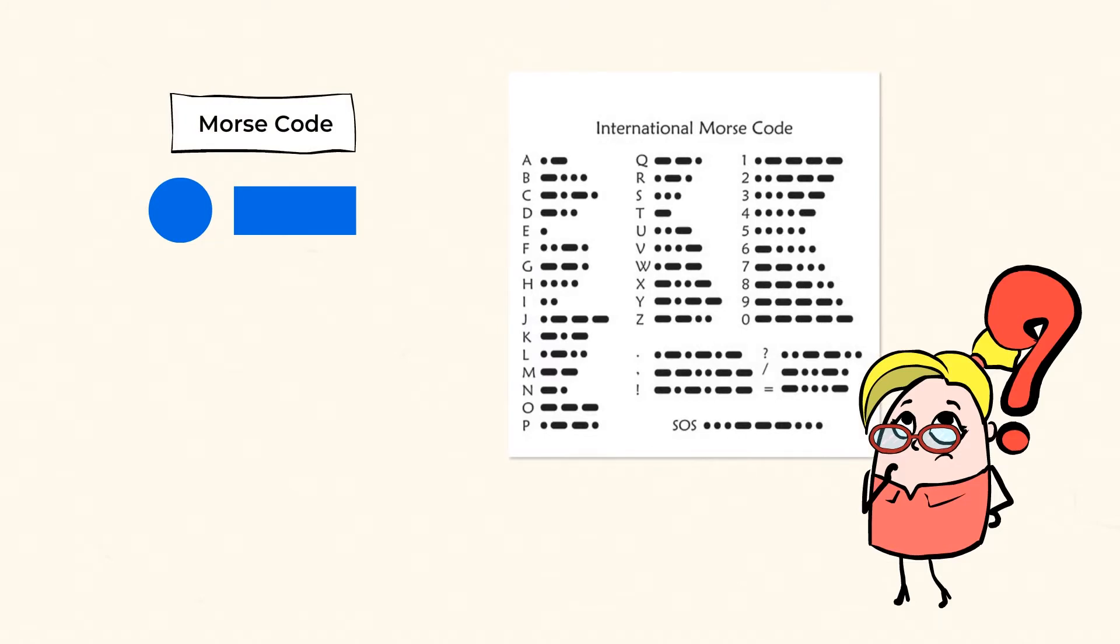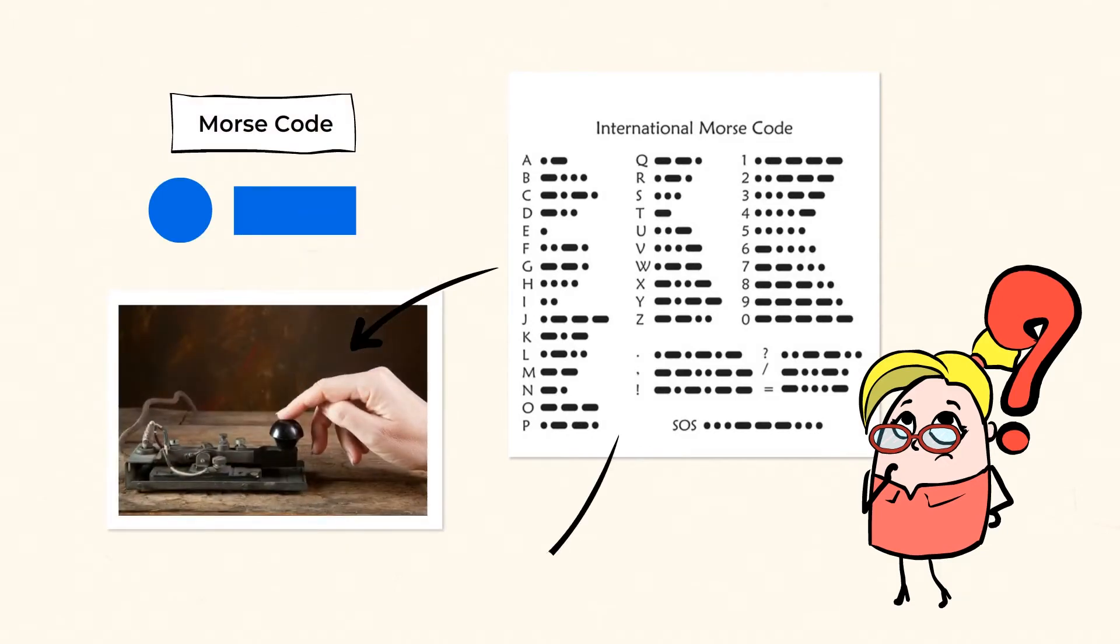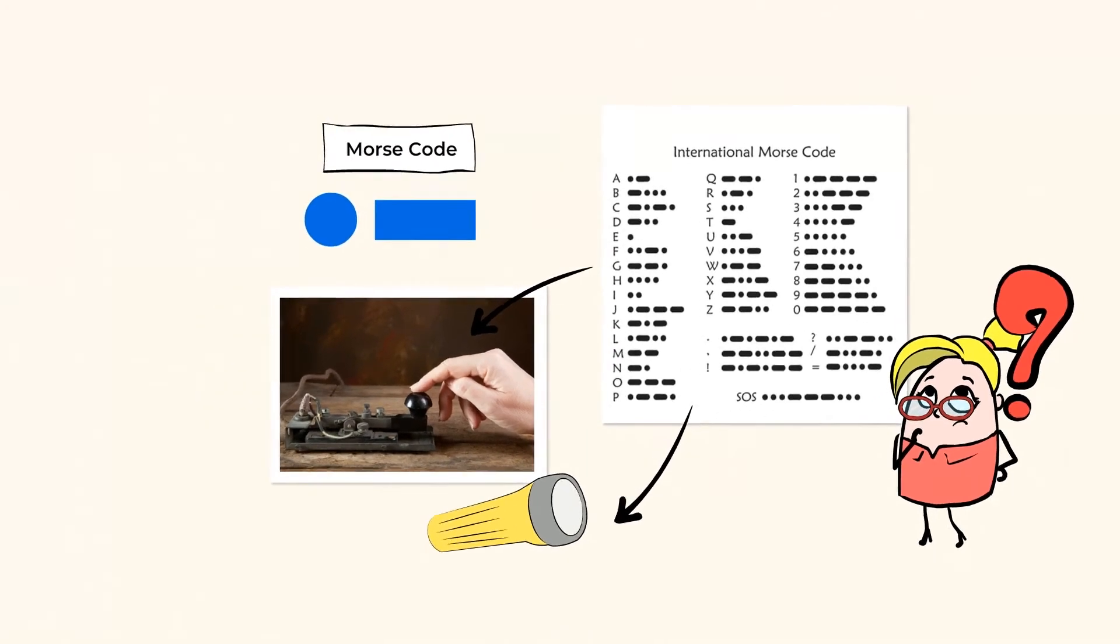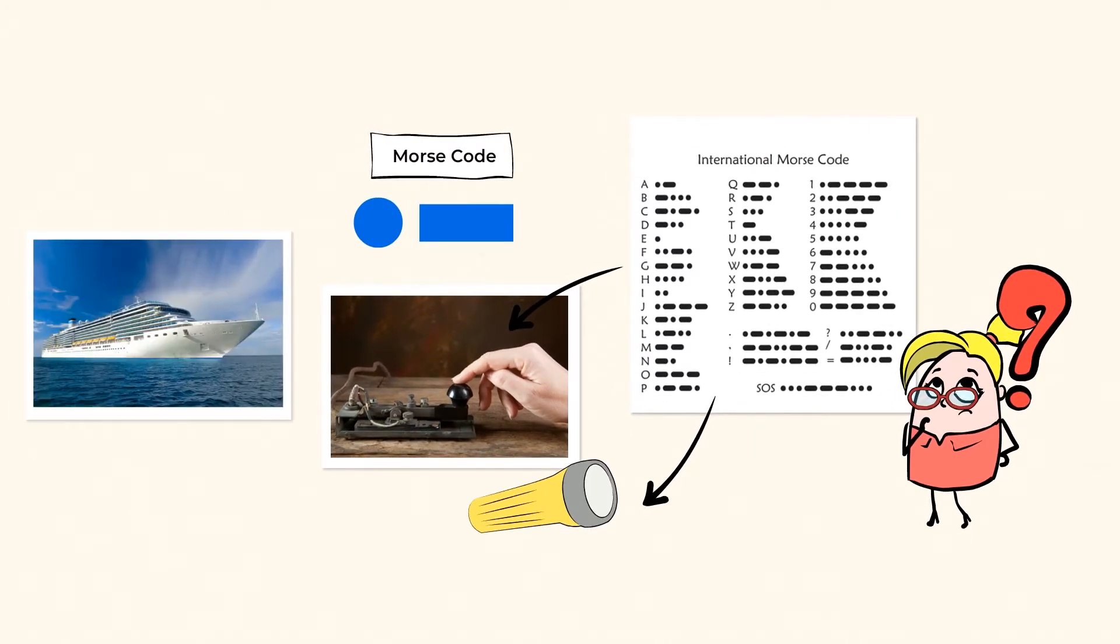When a message is sent by Morse code, each dot is a short click or flash of light, and dashes are longer clicks or flashes. In fact, ships still use lights to send Morse code messages.